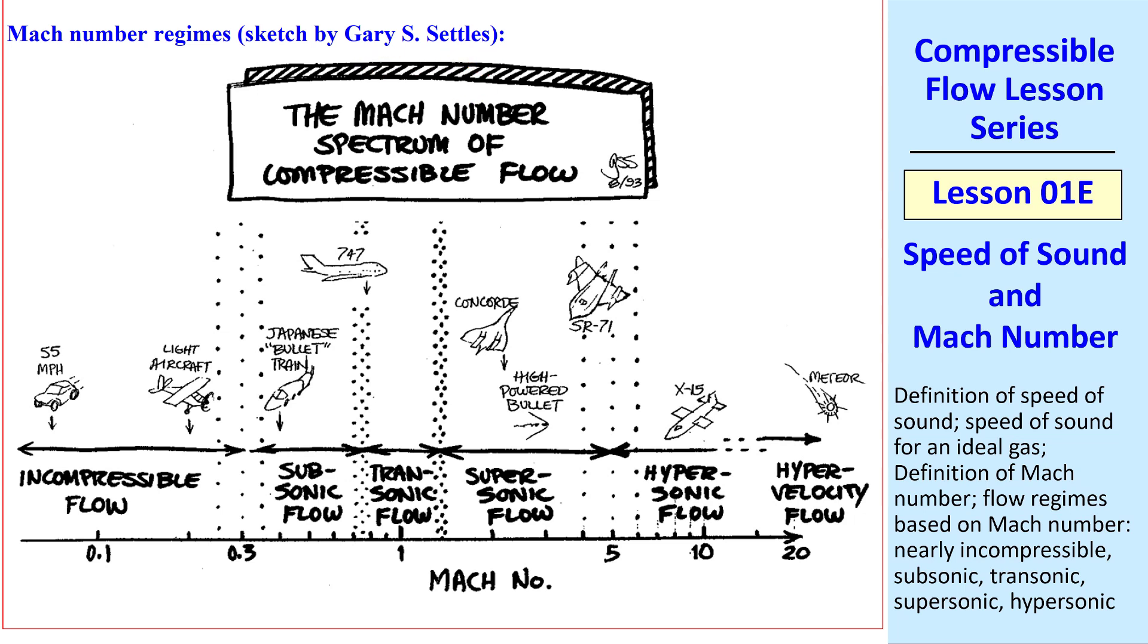One of my former colleagues here at Penn State, Professor Gary Settles, who's now retired, is also an amateur artist. And he drew this sketch, showing the spectrum of compressible flow due to Mach number. Cars traveling at highway speeds are incompressible flow. As are light aircraft like a Piper Cub. Subsonic flows would be, for example, the bullet train. Transonic would be big airplanes like the 747. And then supersonic flow would be, for example, high-powered bullets. And supersonic aircraft like the old Concorde, which is now retired. When you get to Mach numbers around 5, the SR-71 is an example of a high-speed supersonic flow approaching hypersonic. And some test aircraft and missiles can go hypersonic. There's also a term hypervelocity. For example, meteors coming into the atmosphere, where the Mach number can exceed 20.